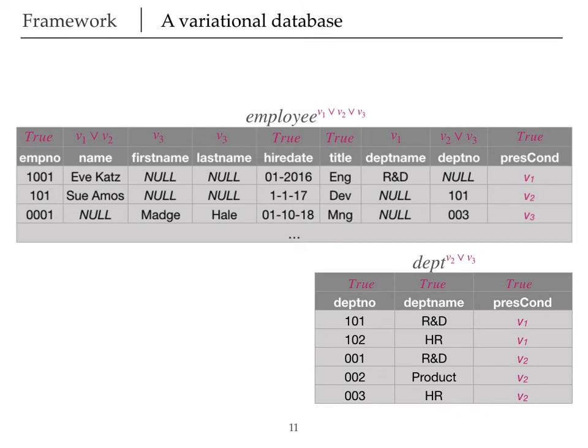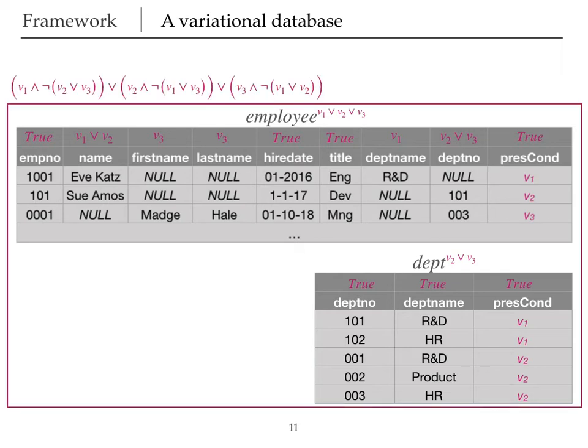And we do this for all of our tables. Then we also have to state under what condition all of these tables exist. This is captured by another feature expression that is applied to all tables and their elements. So here, for example, we're saying only one of these versions at a time can be enabled.